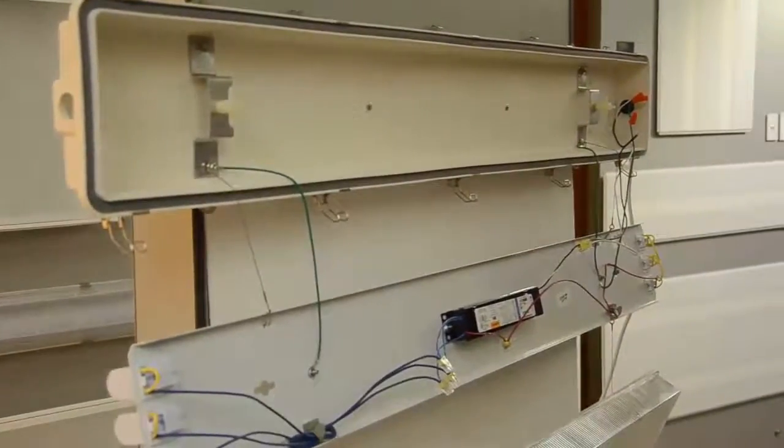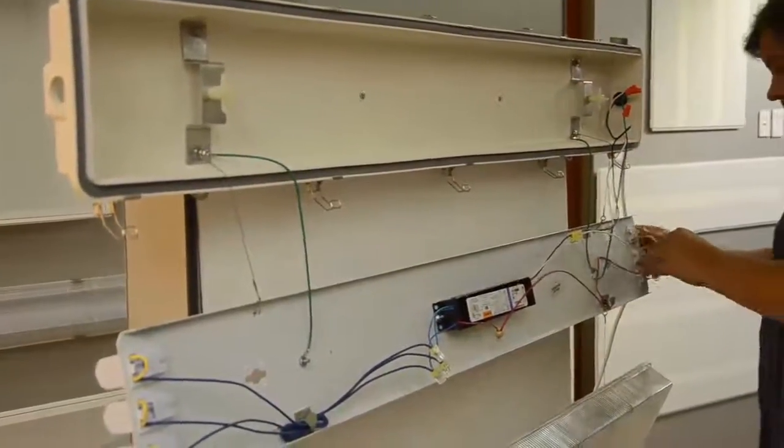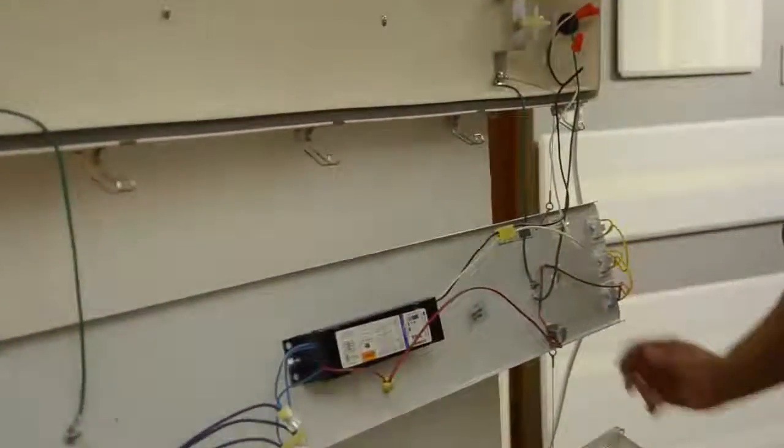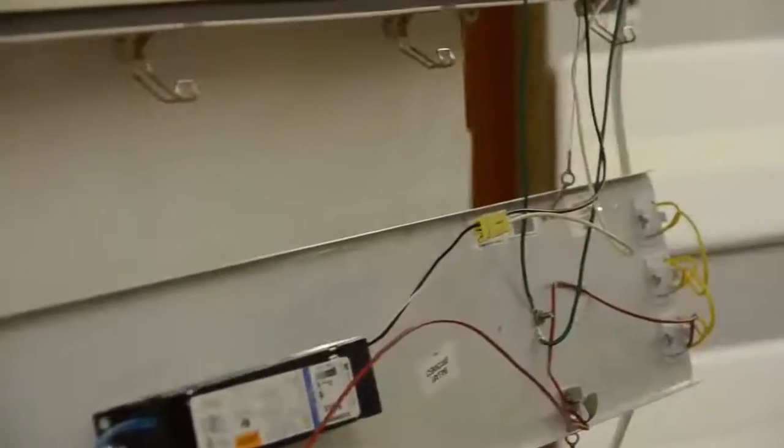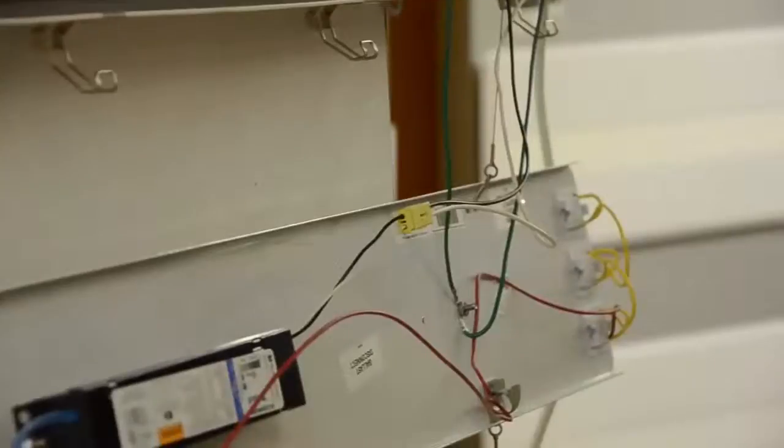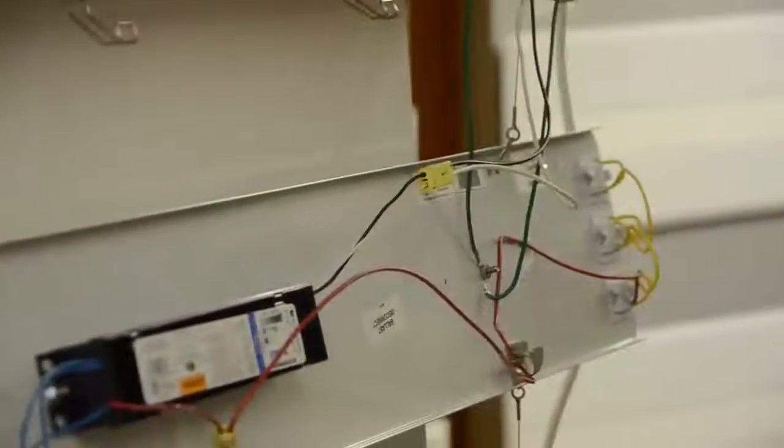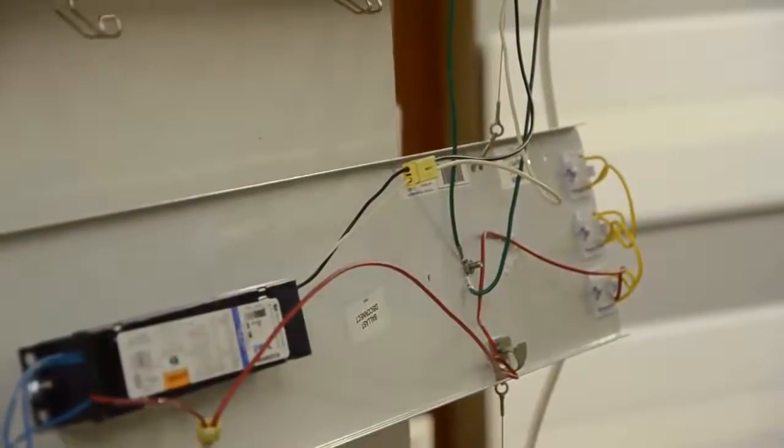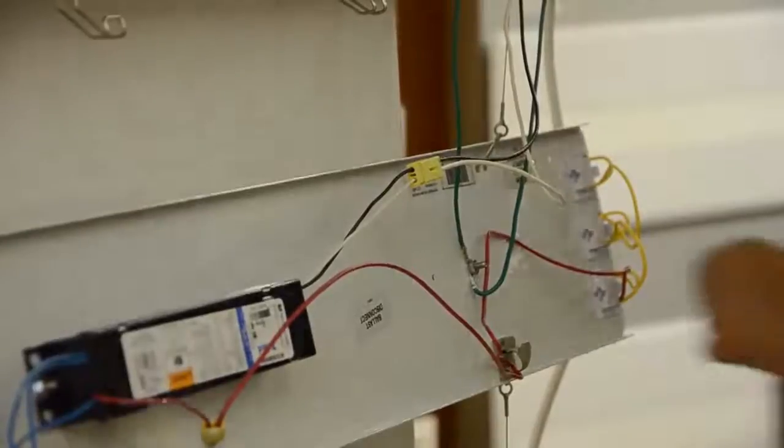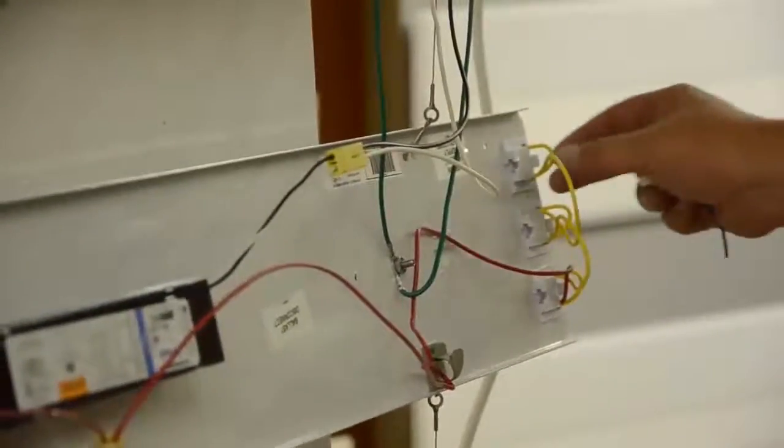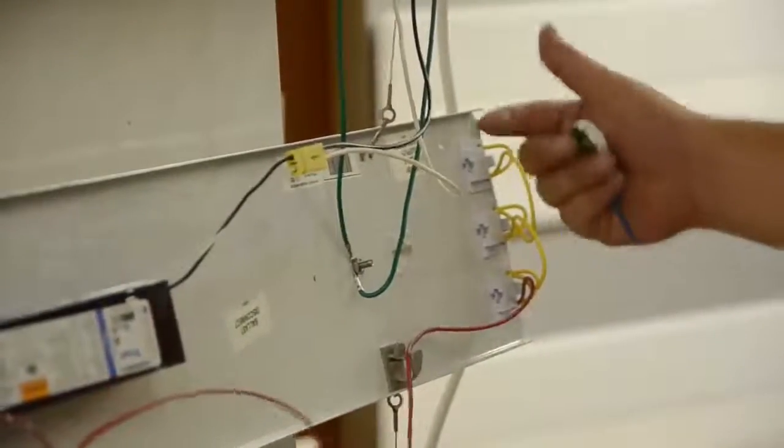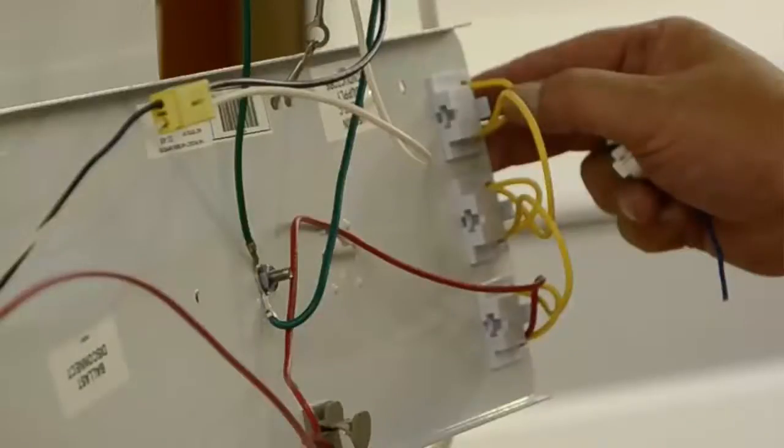First, we're going to identify our sockets. Clearly, these sockets are shunted sockets. The MaxLite internal driver LED T8 requires non-shunted sockets. This socket is clearly shunted because you can see there's a connection wire that connects both sides of the pins on each socket.